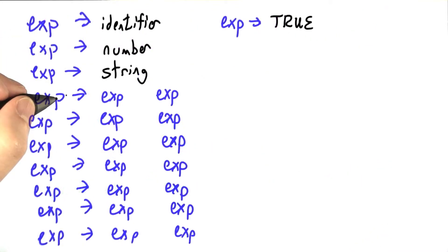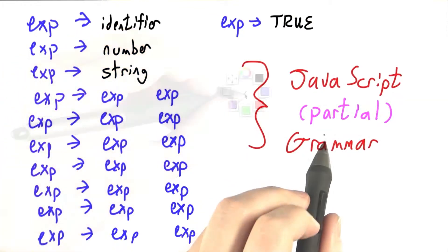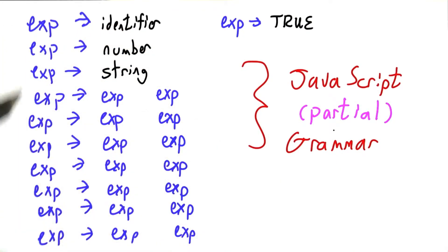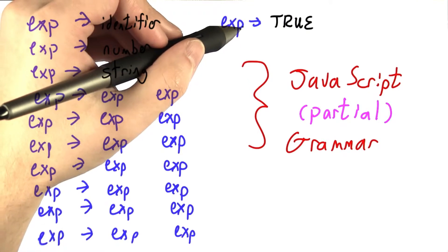So now I'm going to bite the bullet and actually write out a partial grammar for JavaScript. This is only a partial grammar because it only handles expressions, and it only handles some of the expressions.